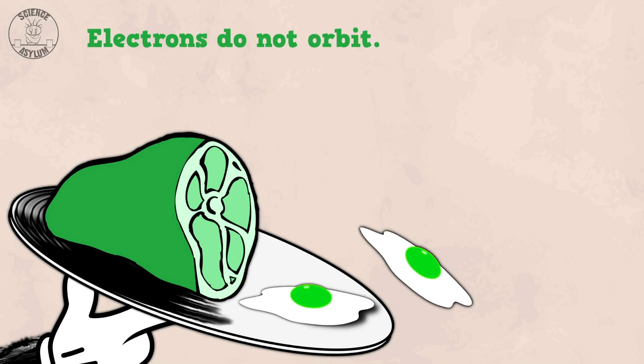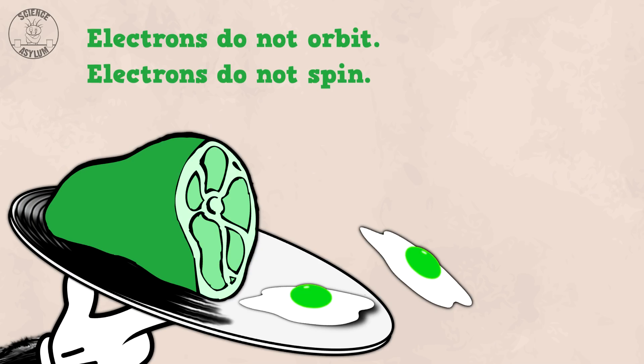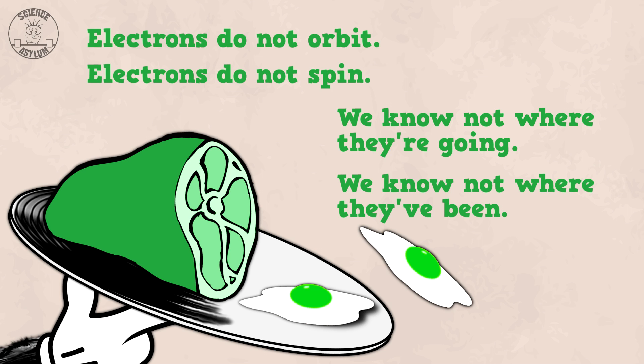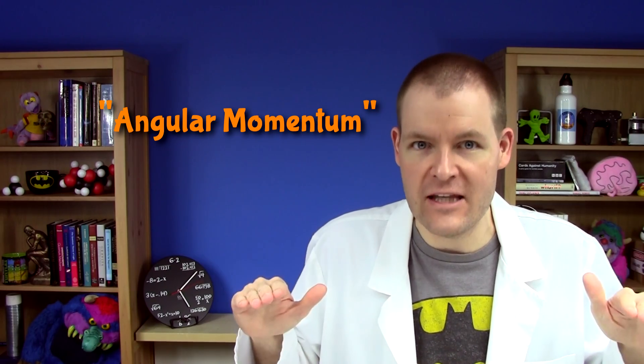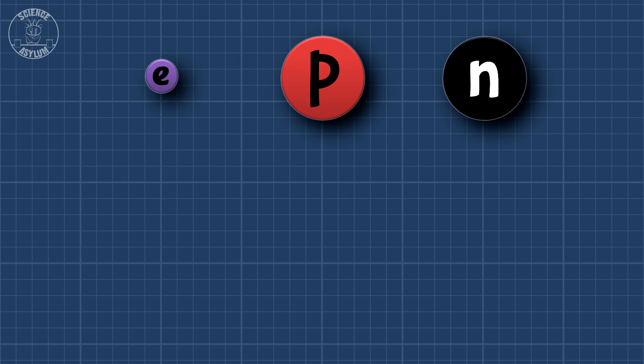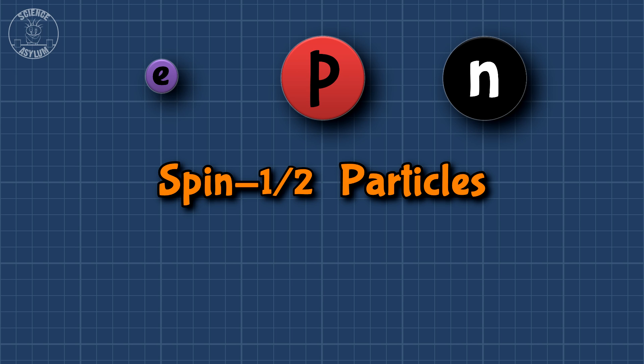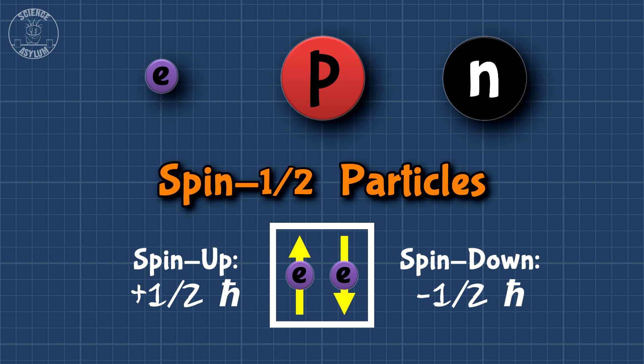So electrons are spinning inside atoms as they orbit? No, no, they don't do anything like that. Electrons do not orbit. Electrons do not spin. We know not where they're going; we know not where they've been. In quantum mechanics, the term angular momentum implies very little about motion. So I'm just going to keep the word 'spin' in quotes from now on. Whatever spin is, it's an intrinsic property of a particle — it can't ever change. Electrons, protons, and neutrons are all spin one-half particles, meaning their angular momentum is always off by half a Planck constant either one way or the other, depending on orientation.